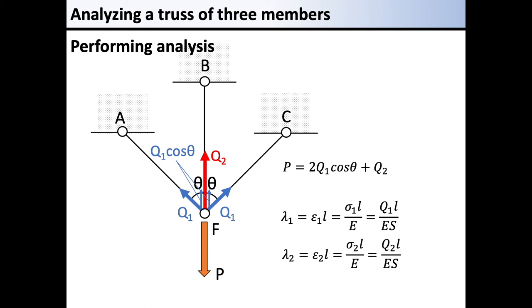We perform the equivalent process for the member BF. The elongation λ2 is the product of strain and the length of the member. The strain is expressed as stress divided by Young's modulus, and the stress is expressed as the axial force divided by cross-section area. Following this procedure, the elongation of the center member λ2 is defined by the equation.